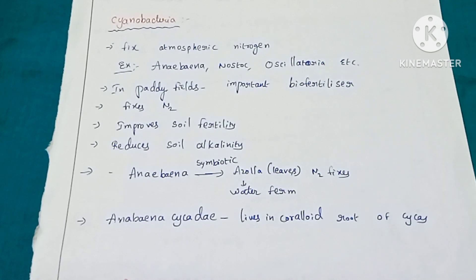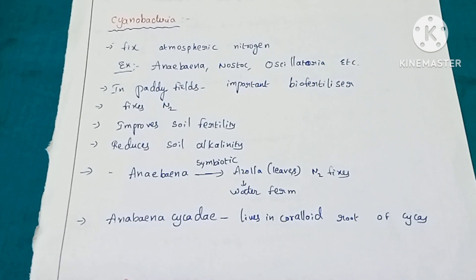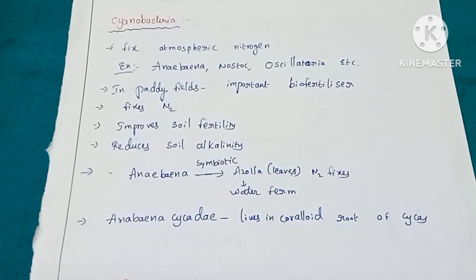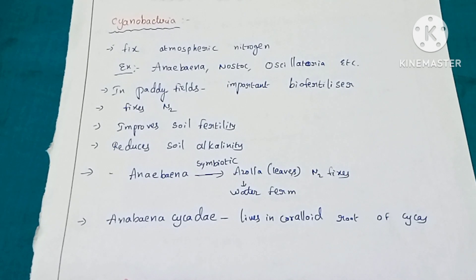So this is about the cyanobacteria and all the biofertilizers used in agriculture. With this, we have completed the chapter Microbes in Human Welfare. If you like my video, please like, share, and subscribe to my channel Lata Akula by Alji Tutorial. Please keep watching. Thank you.